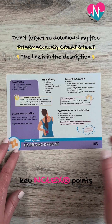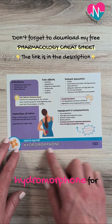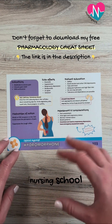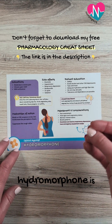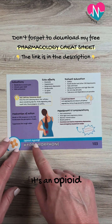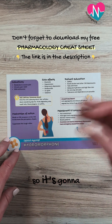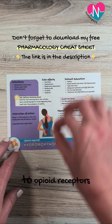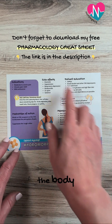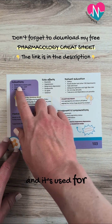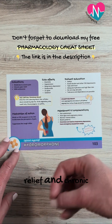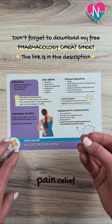Let's walk through some key NCLEX points to know for hydromorphone for nursing school. Hydromorphone is an opioid — specifically an opioid agonist. It attaches to opioid receptors in the body and is used for moderate to severe pain relief and chronic pain relief.